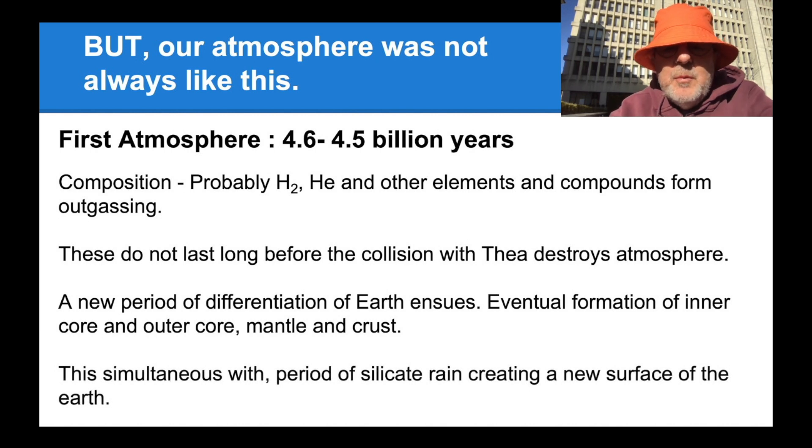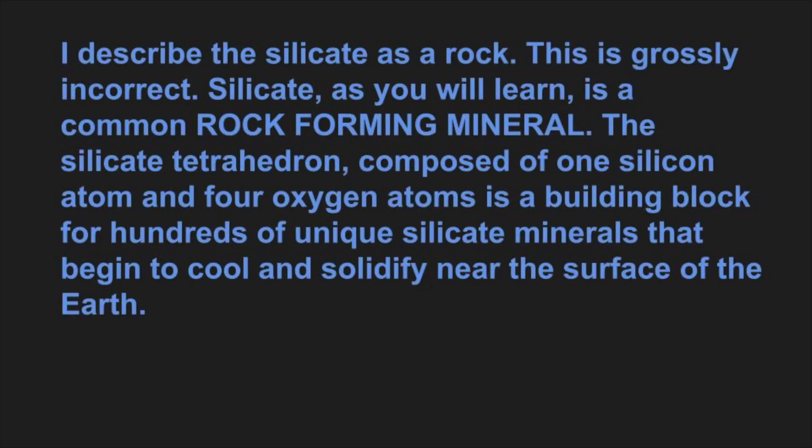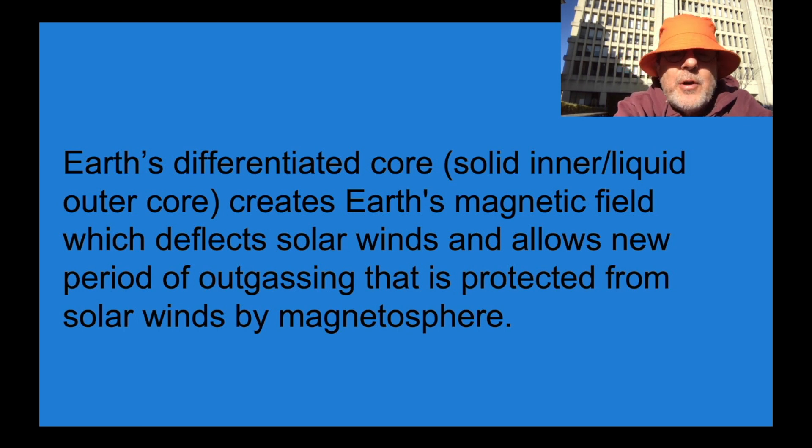This simultaneous with period of silicate rain. What is that? That is a rock. If we found it today, a silicate made of silicon and oxygen. And in that period, the Earth is so hot that what is a rock today, a frozen material, was a liquid raining out of the sky and creating a new surface for the Earth. Earth's differentiated core, solid inner, liquid outer, creates Earth's magnetic field. Hooray! Which deflects solar winds and allows new period of outgassing that is protected from the solar winds by the magnetosphere. Yay, without that, those early gases that formed that early atmosphere may have blown away.